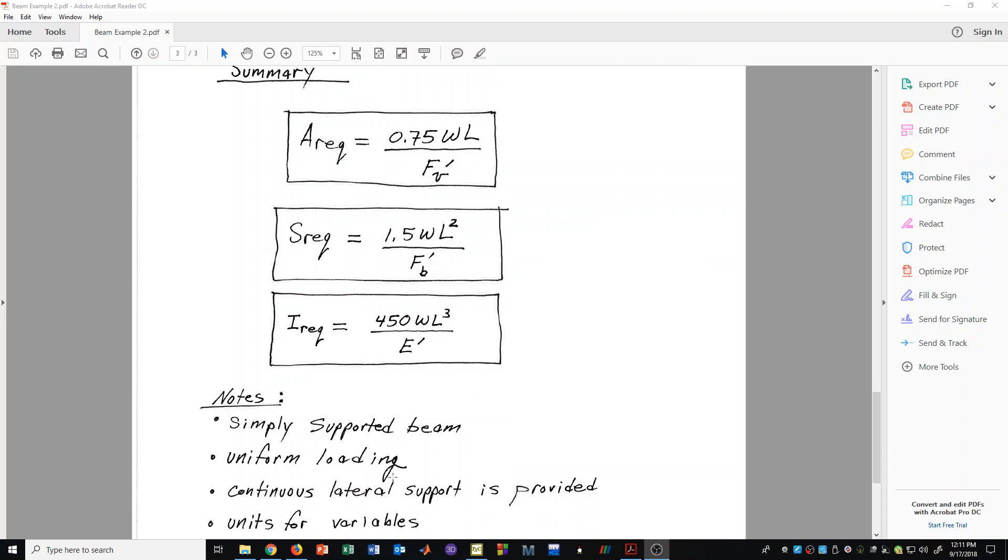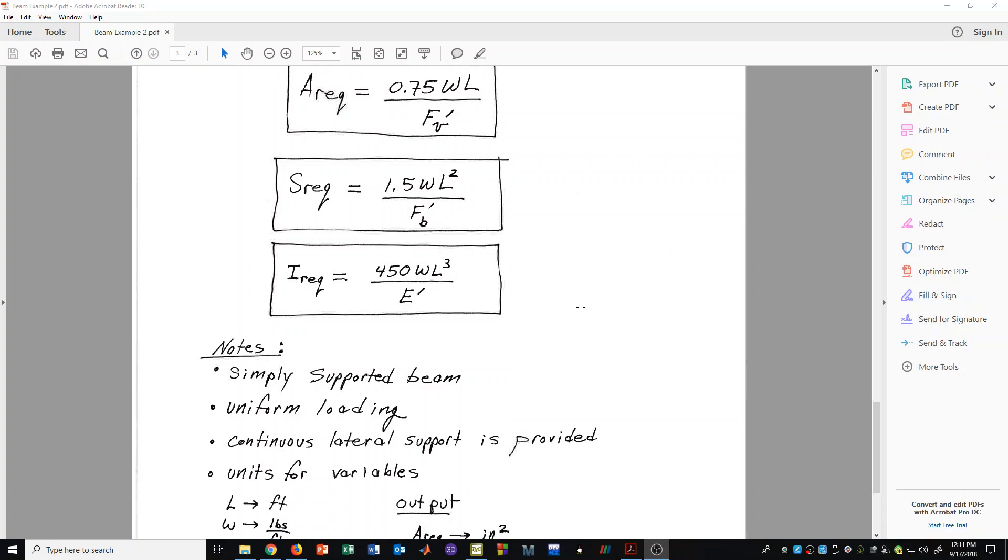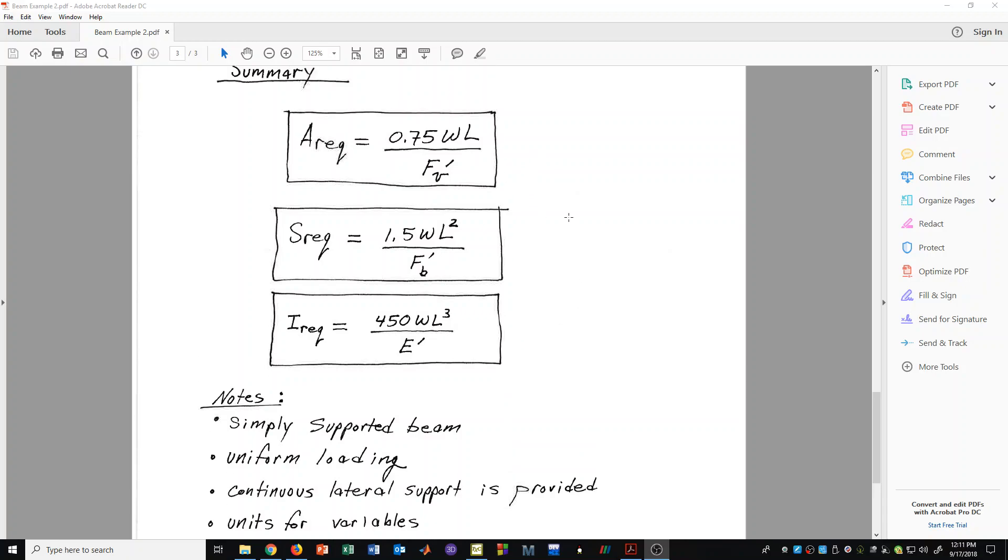This is a very handy way to do beam design when you have a simply supported beam, uniform load, and continuous lateral support provided for the beam. This is so very common in the design of a floor system or a roof system that this gives you a direct or fairly direct solution to the section properties that you need to find for your beam, so that you have a safe design according to allowable stress design. We are going to see in a later video how to use these formulas. This allows the engineer to be more efficient with their time and solve directly for the type of beam properties that you need.